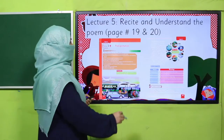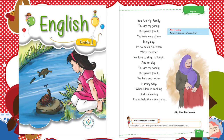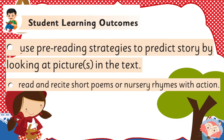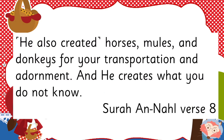Today we'll recite and understand the poem, and we'll cover the SLOs. Before this, my dear children, I have taught you how to recite a poem with actions — remember? So today we'll repeat that practice. We'll use pre-reading strategies to predict the story by looking at pictures in the text, and read and recite short poems or nursery rhymes with actions. These are our today's SLOs.